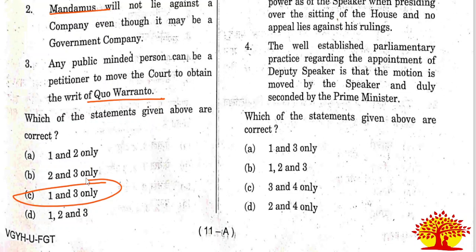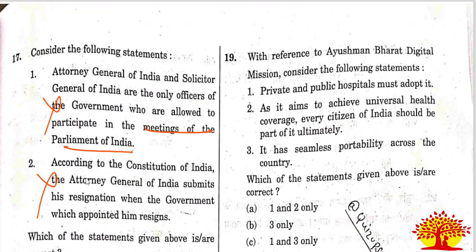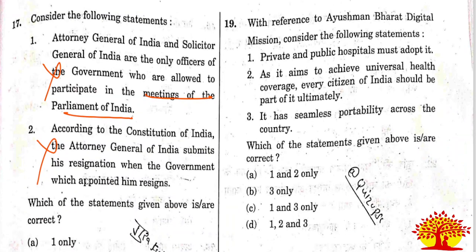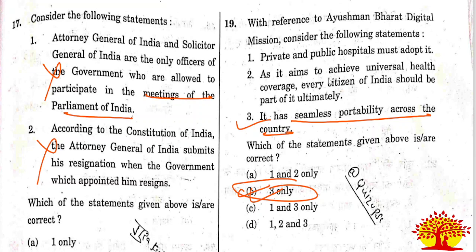Nineteenth question on Ayushman Bharat Digital Mission: Only statement 3 is correct - it has seamless portability across the country. Statement 1, that it aims to achieve universal health coverage for every citizen of India, is an extreme statement and is wrong. Statement 2, that all private and public hospitals must adopt it, is also wrong. Only statement 3 is correct. Option B is the right answer.